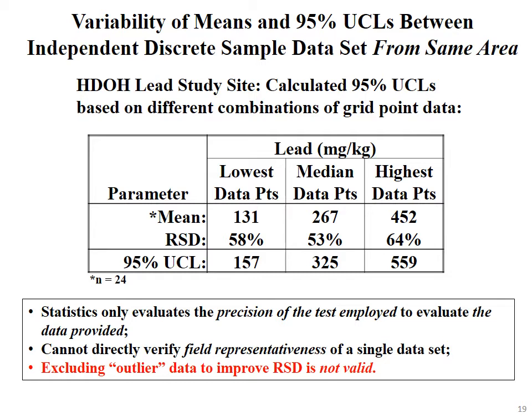This is a problem that statistician friends of mine have really drilled into me: statistics only evaluates the precision of the test employed to evaluate the data provided. From their standpoint, they can't say anything about whether your data represent your field area — that's up to the person who collected the samples. All they can tell you is the precision of their estimate of the mean and the UCL based on the data you provided. They can't directly verify the field representativeness of a single set of data; the only way to do that is to go back and collect another set. Even then, with replicates for discrete samples, even if they tend to match up or not, you can't really be sure which set is real unless samples are collected properly according to sampling theory.